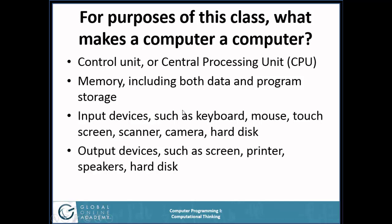For the purposes of this class, what makes a computer a computer? We're going to insist that for us to call something a computer, it has some sort of control unit or central processing unit — it's not just a mechanical device like an abacus. It has to have memory, including a place for both data and the programs you're running to be stored. It has to have some method of getting input — that could be keyboard, mouse, touch screen, scanner, camera, hard disk, and more things are added every day. It also has to have some way to get output, like a screen, printer, speakers, or a hard disk.